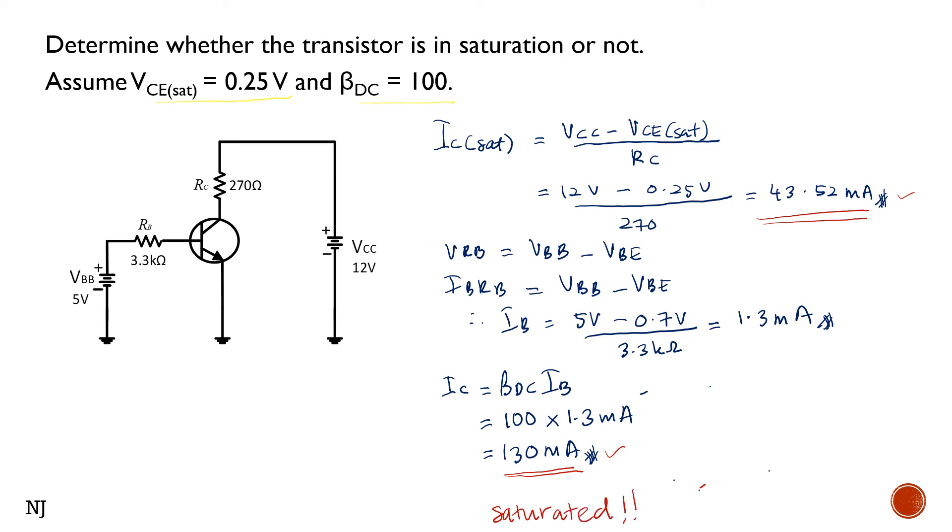We actually will never get the value of this 130 milliamps as the IC saturation is at 43.52 milliamps only. Even if we increase the base current, the collector current will remain at its saturation value.